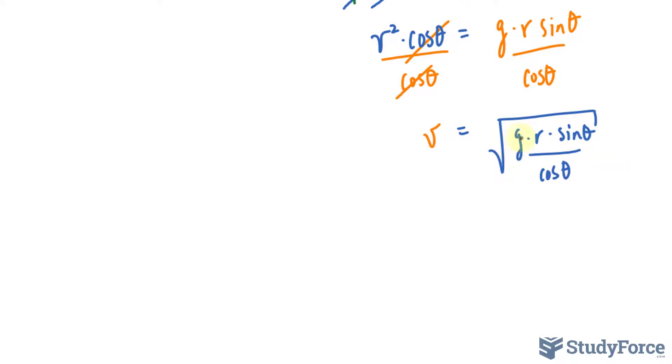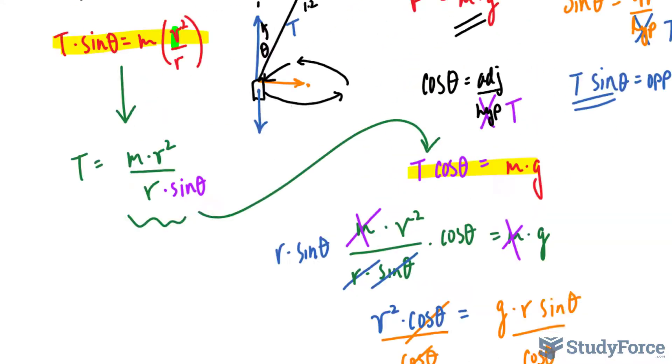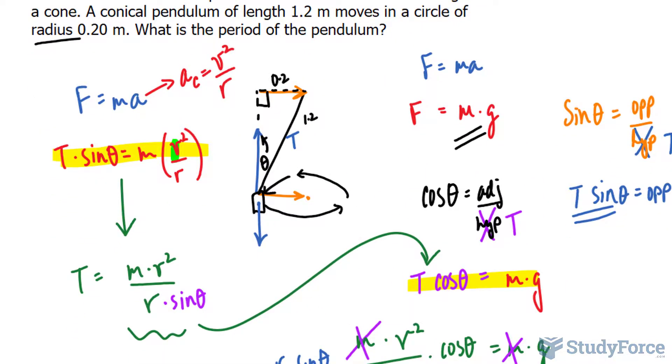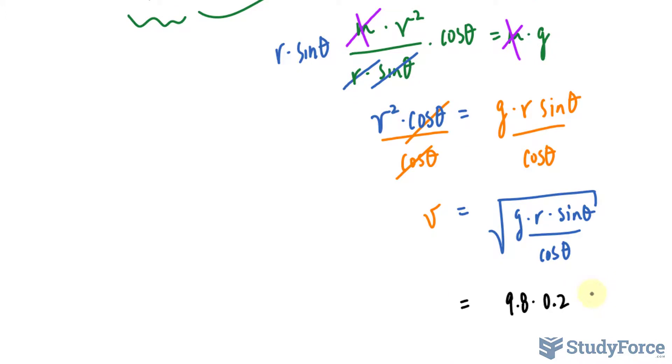The next step is to replace these with what they are equal to. So g is represented as the acceleration due to gravity being 9.8. The radius is given in the question as 0.2. Sine theta, remember sine is opposite over hypotenuse. So opposite over hypotenuse is 0.2 over 1.2, let me write that in, 0.2 over 1.2.